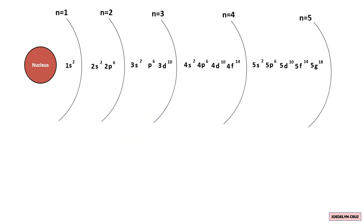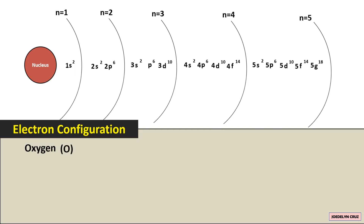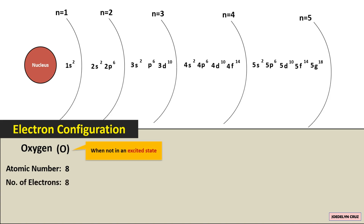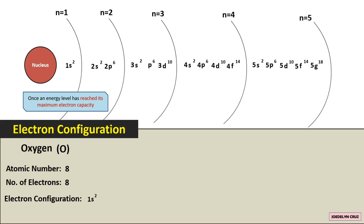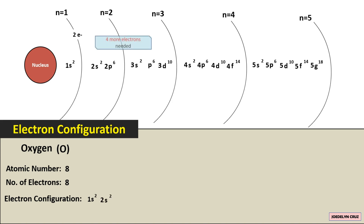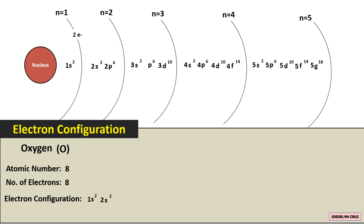Let us proceed to an exercise and determine the electron configuration of oxygen. Oxygen has an atomic number of 8, which also corresponds to its number of electrons. Starting with the first energy level, we write 1s2, accounting for 2 electrons. Once the first energy level reaches its maximum, we proceed to the second energy level and write 2s2. With 4 more electrons needed, we fill the 2p sublevel with 4 electrons. Thus, the electron configuration of oxygen is 1s2 2s2 2p4, totaling 8 electrons.